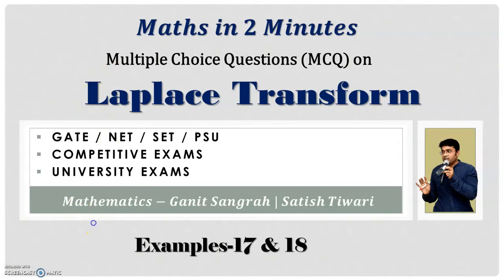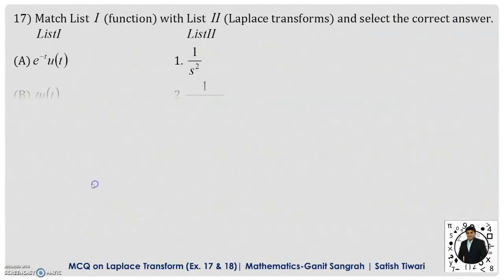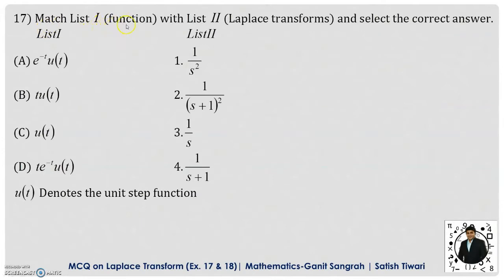We will see two examples, 17 and 18. Example number 17 is match list 1, which is a list of functions, with list 2, which is a list of Laplace transforms, and select the correct answer. So list 1 and list 2 are provided to you and we have to find out the Laplace transform for the functions in list 1.